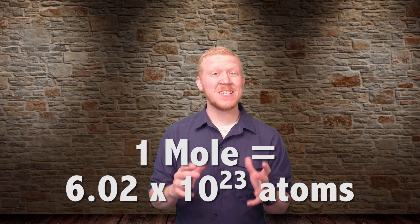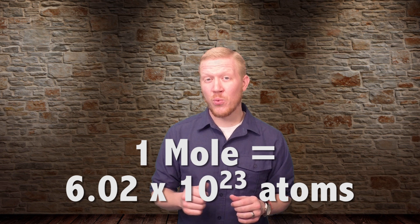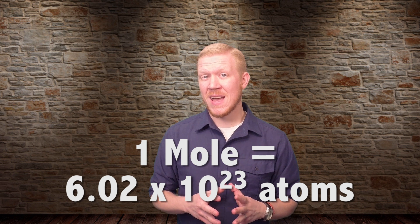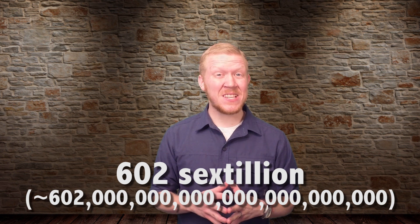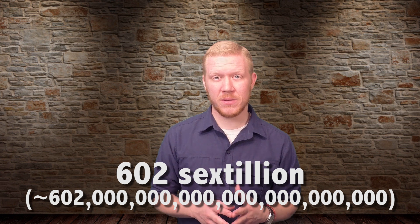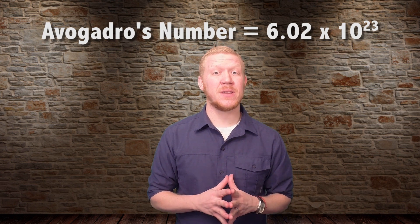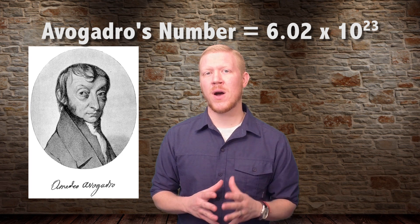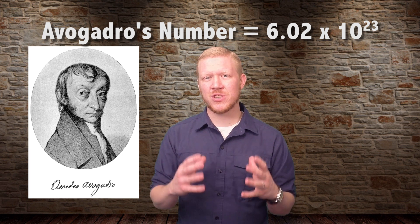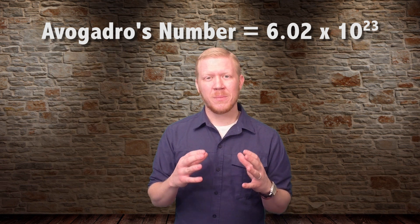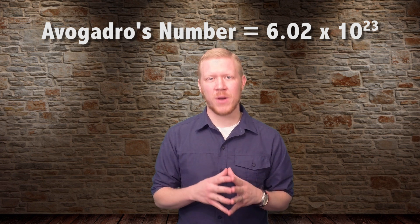One mole, however, is equivalent to 6.02 times 10 raised to the power of 23 atoms. That's 602 sextillion. This number is called Avogadro's number and it's named after Italian chemist and physicist Amadeo Avogadro. This number is so enormously large because atoms are so incredibly small.